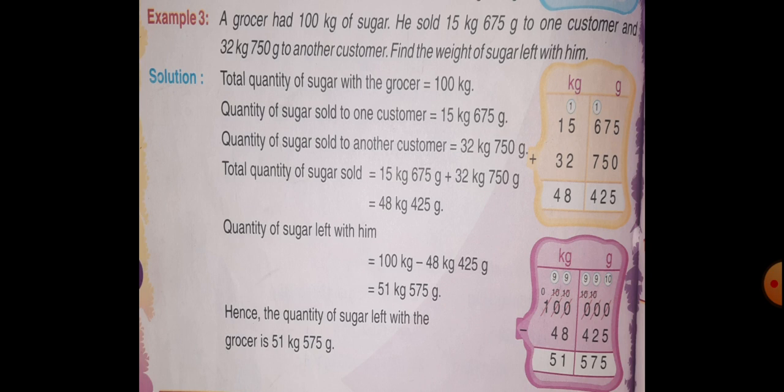Then, 48 under kg column and 425 under gram column. And after subtraction, you will get 51 kg 575 g. Hence, the quantity of sugar left with the grocer is equal to 51 kg 575 g.